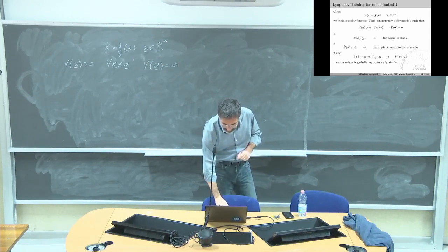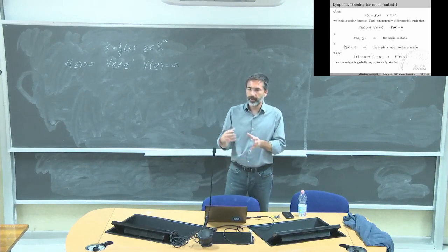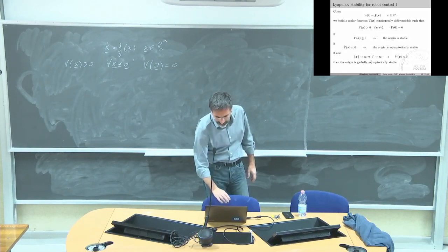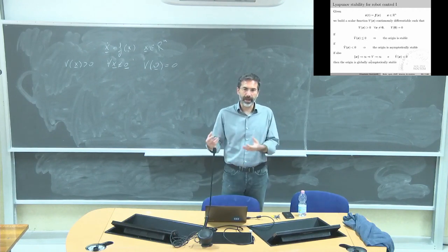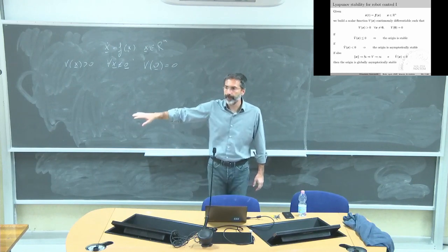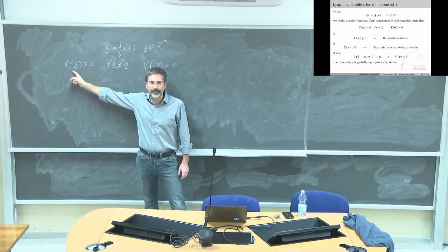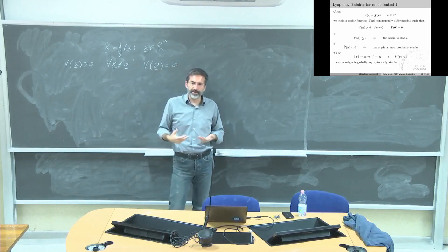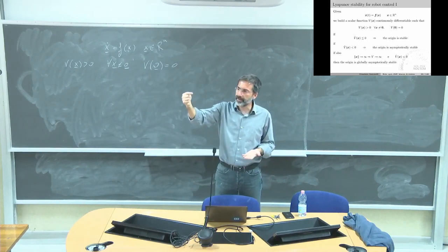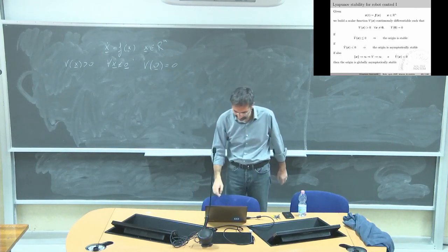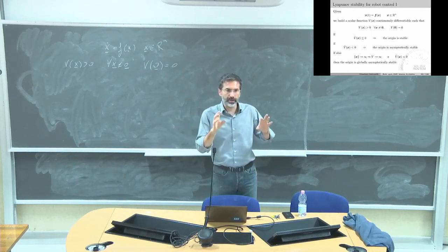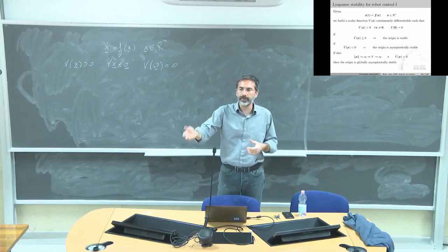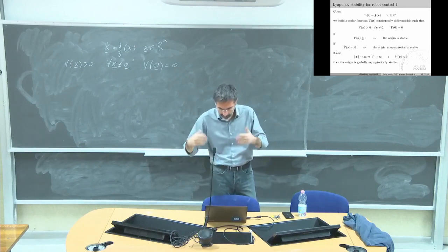I can also demonstrate a global property for any X in R^N space if my function is radially unbounded. The intuition: I need to select a function that is positive with a negative time derivative. If the function is positive and the time derivative is negative, it is going to zero. This is the Lyapunov stability theorem — Lyapunov was a Russian mathematician who provided many stability theorems; this is the basic formulation.